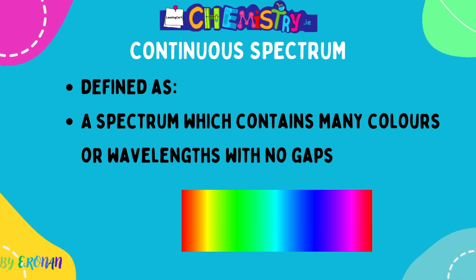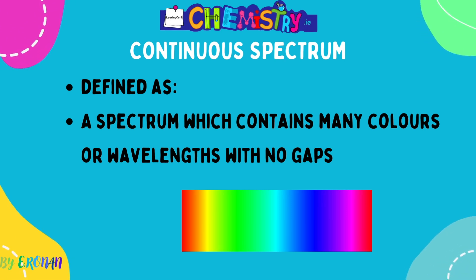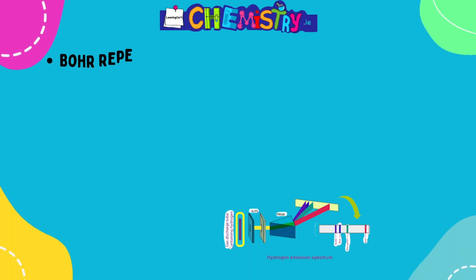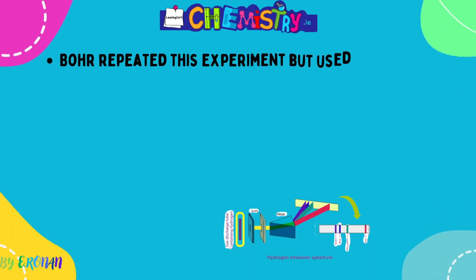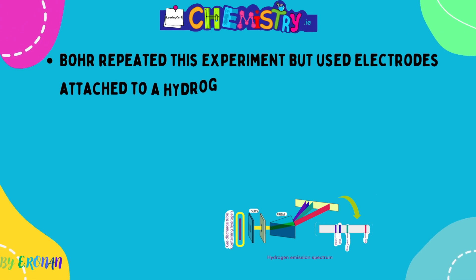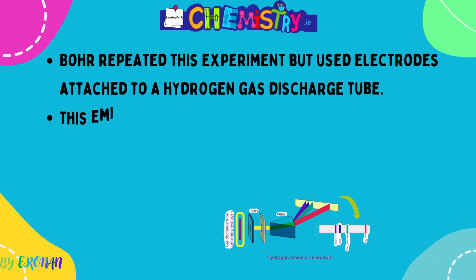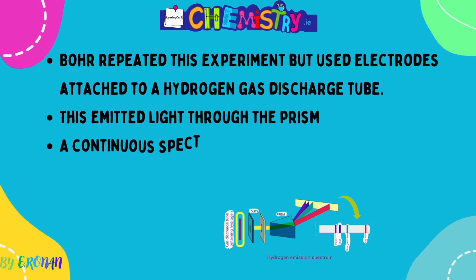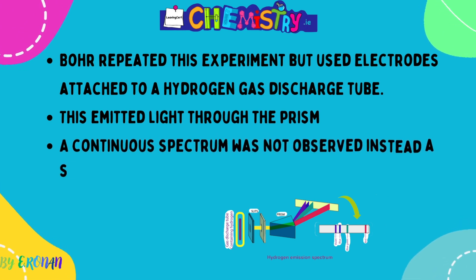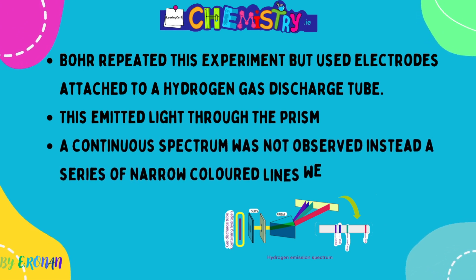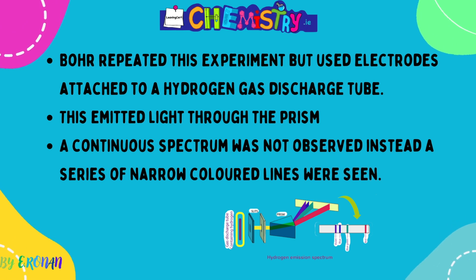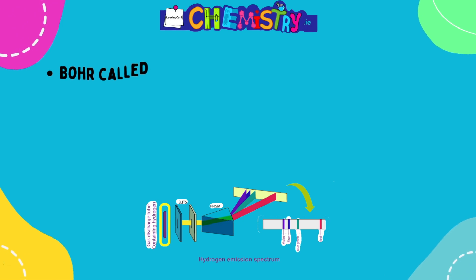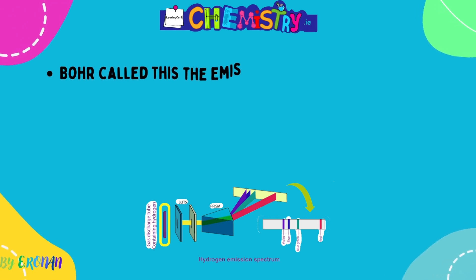From here, Bohr replaced the white light through a prism. He used a discharge tube with elements in gaseous form and passed an electric current through them. Using electrodes attached to a hydrogen gas discharge tube, light was emitted through the prism, and a continuous spectrum was not observed — instead, a series of narrow colored lines were seen against a dark background.